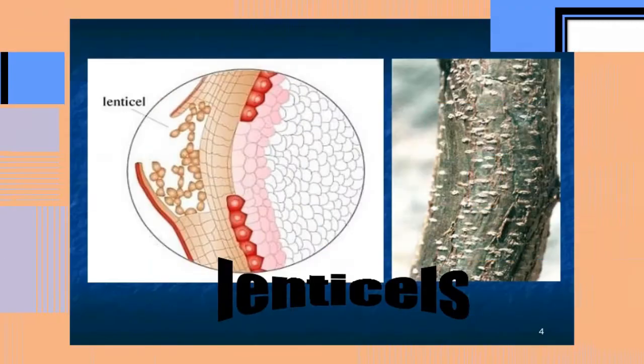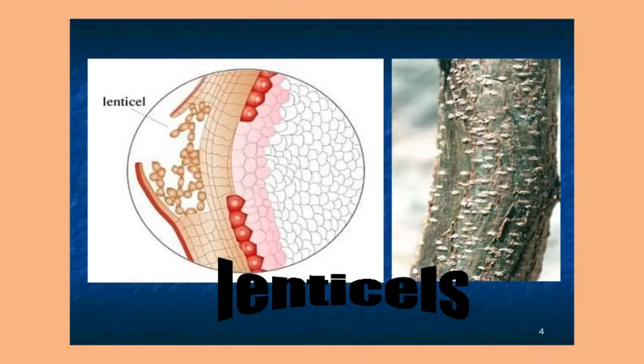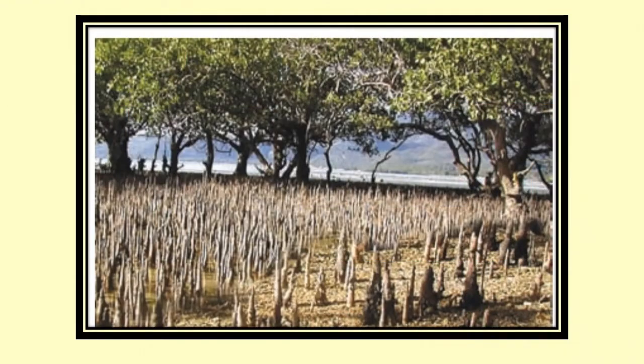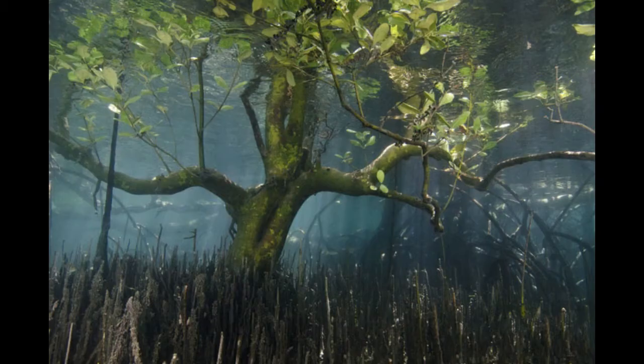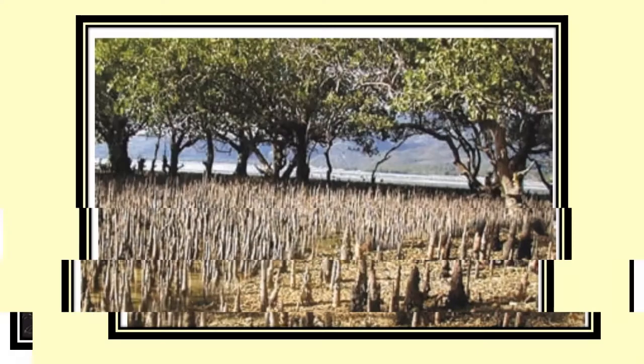Lenticels are present on the surface of roots and stems. Aerial roots are respiratory roots which are specialized structures that help in gas exchange in mangrove plants.